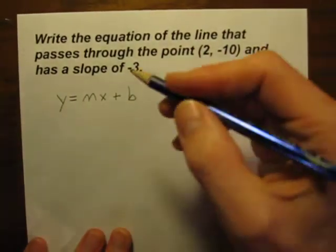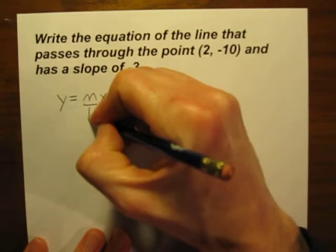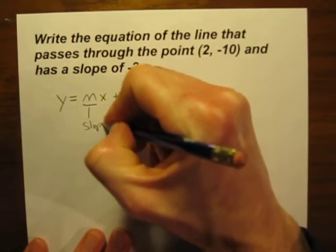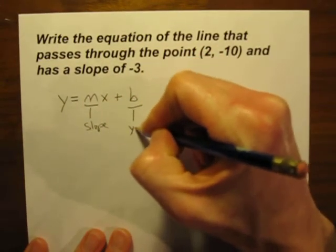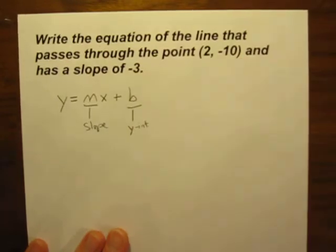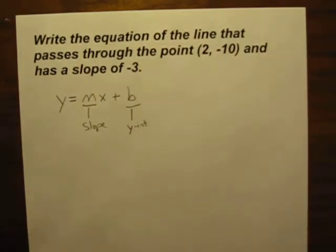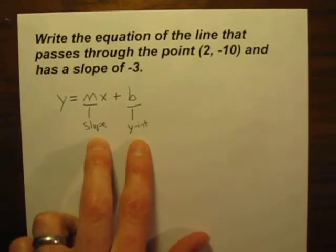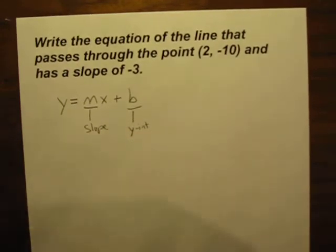Remember in slope intercept form, the m is our slope, the b is our y-intercept or where our line is going to cross our y-axis. So really when we're going to write this equation, those are the two things that you need to figure out to write the equation.